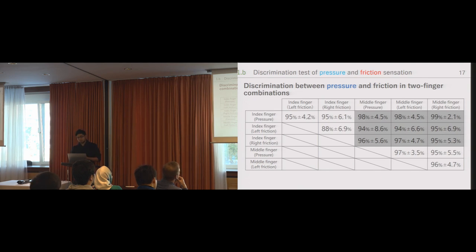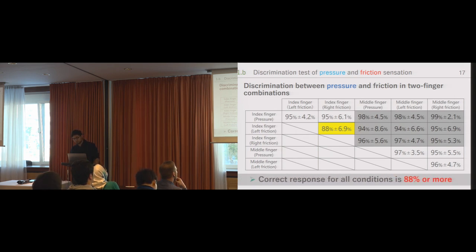This table shows the correct response rate for the mixed pressure and tangential sensation conditions presented in different combinations. The shaded area is the condition of mixed finger like index and middle finger and the yellow one is the lowest correction rate we have. We can say very high discrimination rate was obtained as well under both the pressure and friction, tangential friction conditions, which suggests the device can effectively present all types of haptic sensation.